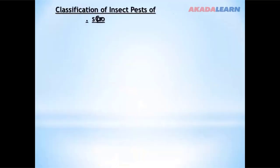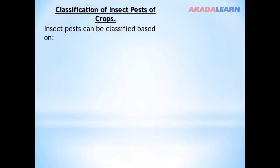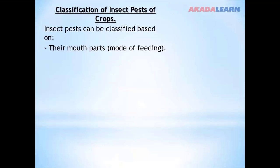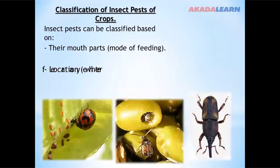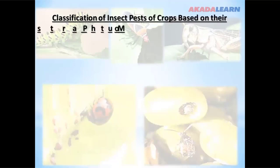Classification of insect pests of crops: insect pests of crops can basically be classified into two groups. Number one, a classification based on their mouth parts or their modes of feeding. Number two, based on their location — that is, where they are found. Now we look at classification of insect pests based on their mouth parts.